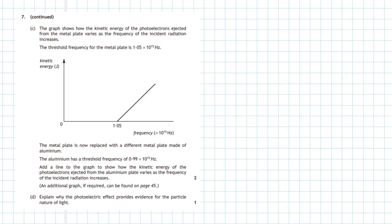Question 7c. The graph shows how the kinetic energy of the photoelectrons ejected from the metal plate varies as the frequency of the incident radiation increases. The threshold frequency for the metal plate is 1.05 times 10 to the power of 15 hertz. Now, if you look very closely at the graph, if we have a photon coming in with any frequency greater than 1.05 times 10 to the power of 15 hertz, it will release photoelectrons from the metal surface with excess energy.